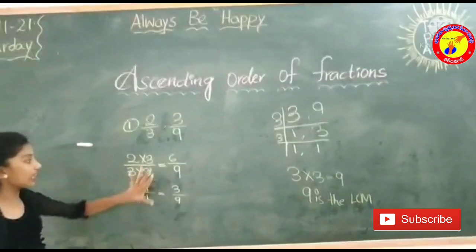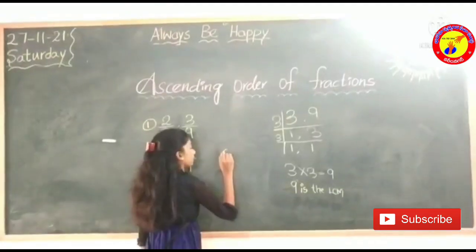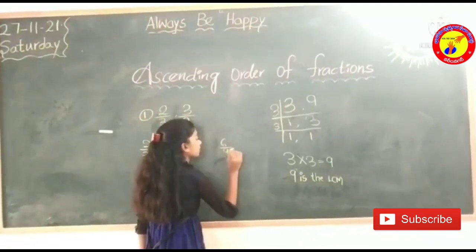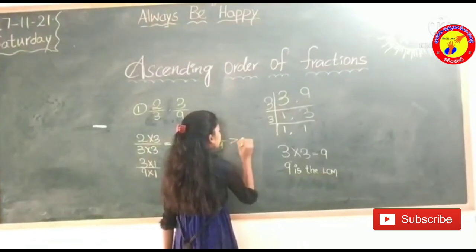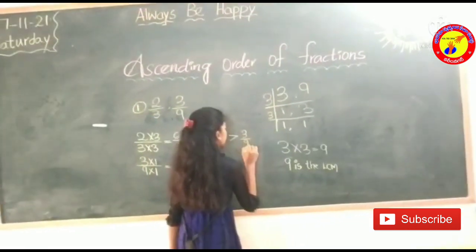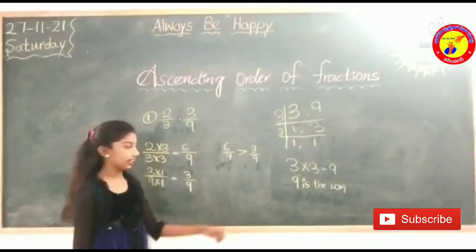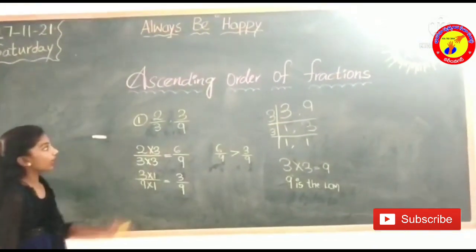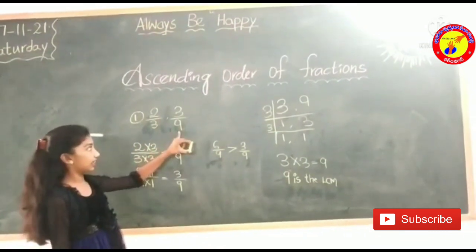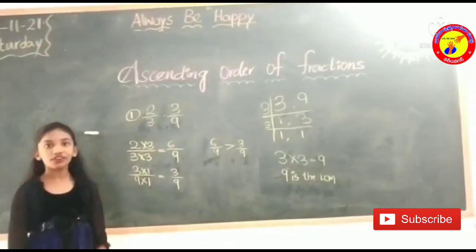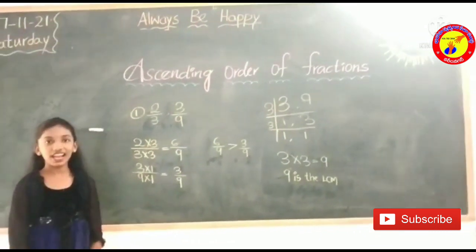Now let us find ascending order. 6 by 9 is greater than 3 by 9. So 2 by 3 is greater than 3 by 9. Thank you for watching. Like, share and subscribe.